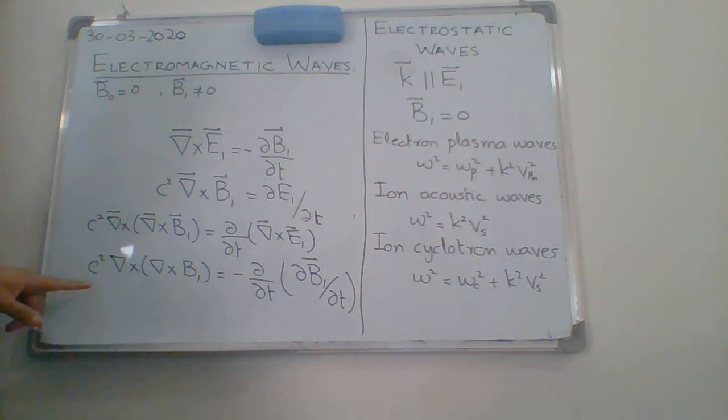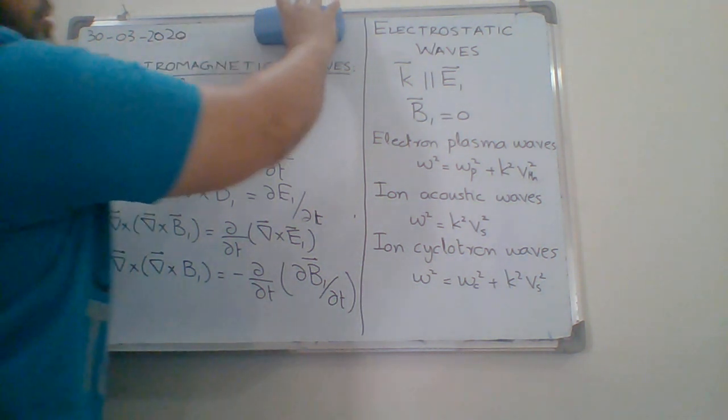Okay, now here we have del cross del cross b1. You can find in any standard electromagnetic book like Griffiths that you will find this expression of del cross b1. So by using this expression here, I am going to find out...